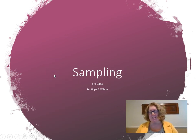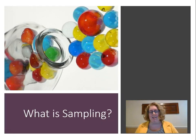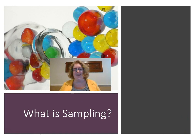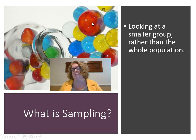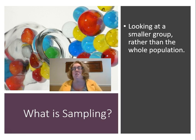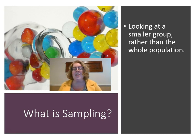First we need to talk about sampling. Sampling is looking at a smaller group rather than the whole population. When we're looking at standardized testing and the norm reference sample, they didn't give that test to every single student in the United States — that would be impossible. So instead they gave the test to a sample of students that represents the whole population.